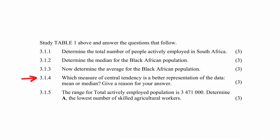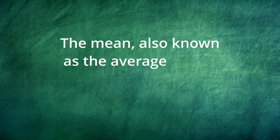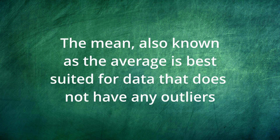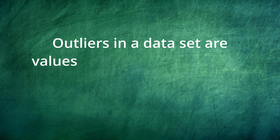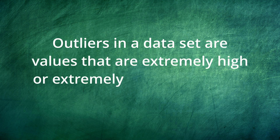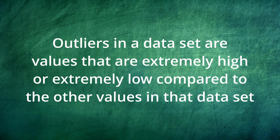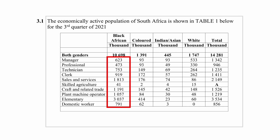In question 3.1.4 you are required to state with reason which measure of central tendency is a better representation of this data. Your options are between mean and median. The mean, also known as the average, is best suited for data that does not have any outliers. Outliers are values that are extremely high or extremely low compared to the other values in the data set. For this data set, there are two outliers: skilled agriculture and elementary. Skilled agriculture is very low and elementary is very high compared to the other values.